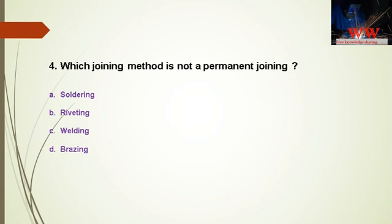Question 4: Which joining method is not a permanent joining method? A — soldering; B — riveting; C — welding; D — brazing. The right answer is riveting.